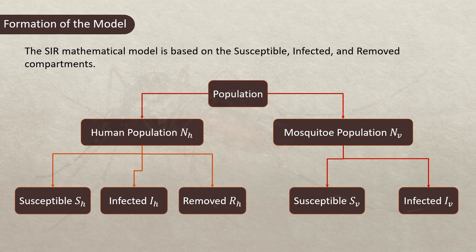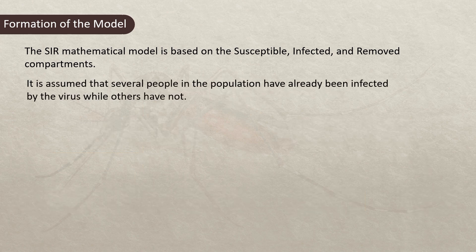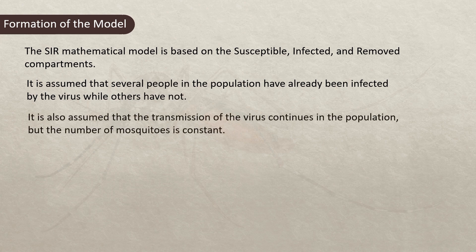Now there are some assumptions of the model. It is assumed that several people in the population have already been infected by the virus while others have not. It is also assumed that the transmission of the virus continues in the population but the number of mosquitoes is constant. These are the two assumptions of this model.